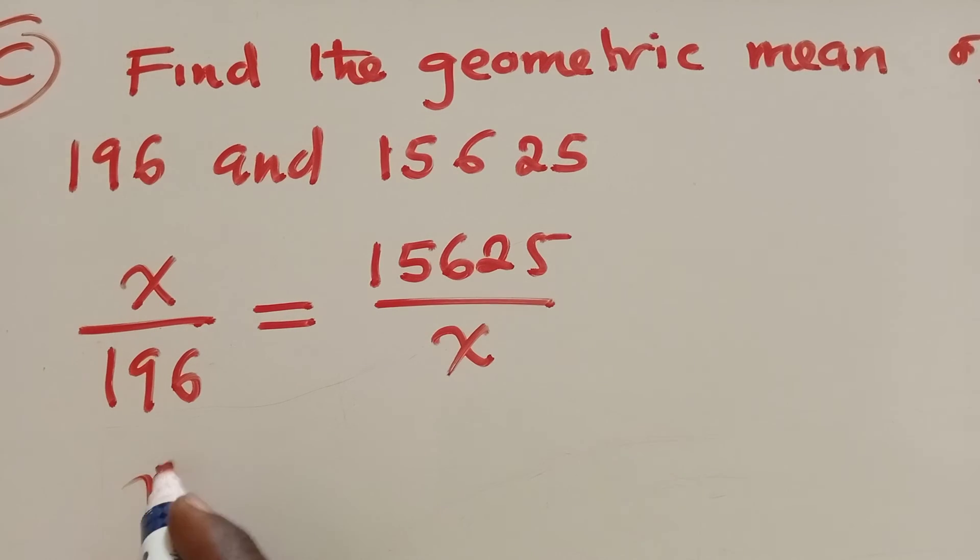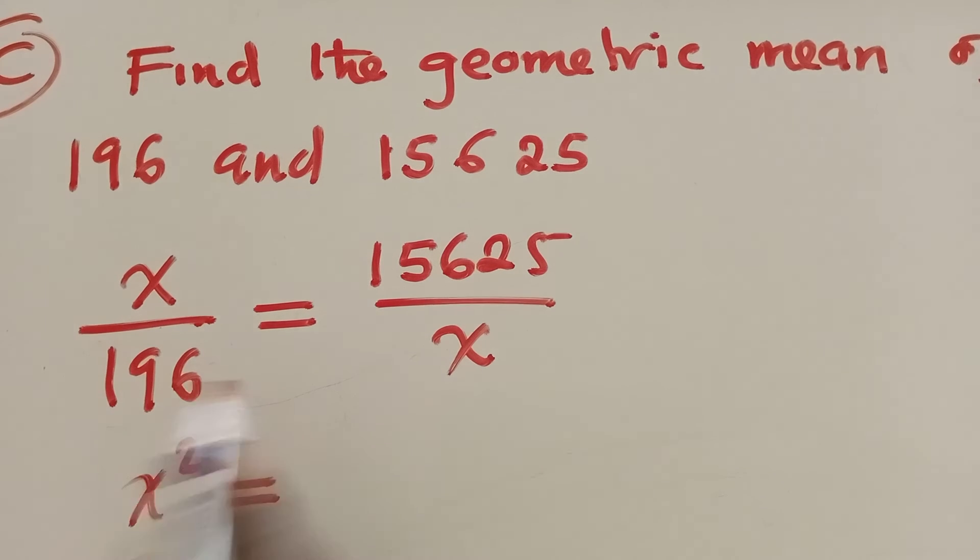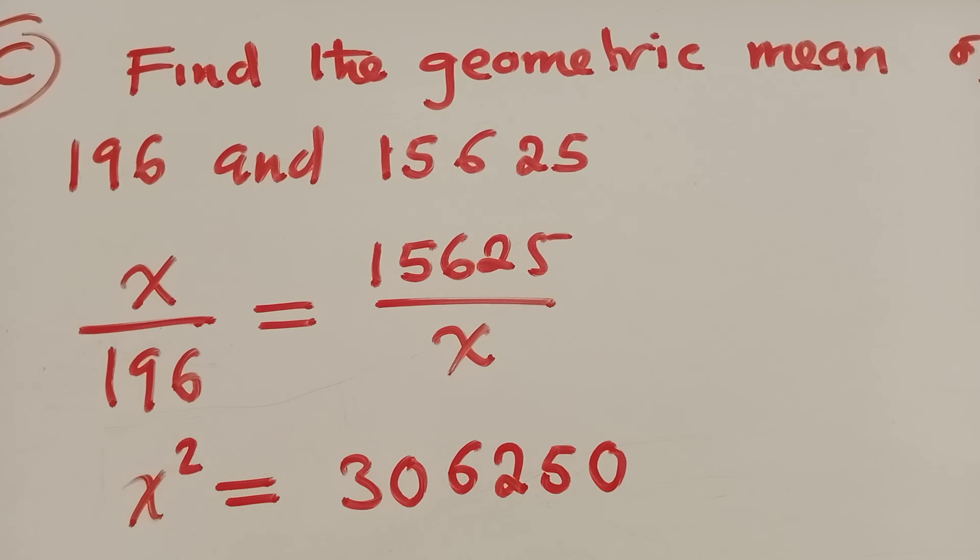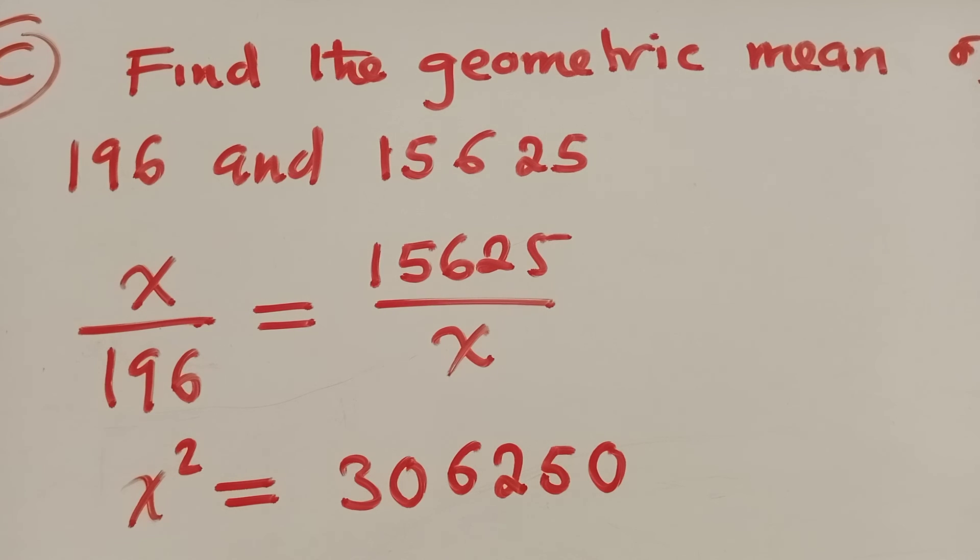So now, you cross multiply. We have x squared, because x by x is x squared, which is equal to when you multiply here, 196 times 156.25. We are getting 3062600. So try to confirm if this is what you are also getting. Let me go through again. We try to check. Yeah, there was a zero missing here. So this is what we are basically getting.